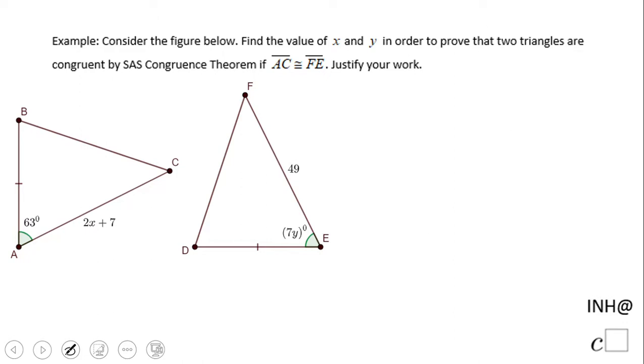Welcome or welcome back to I Need Help at C-Square. In this example, we're going to look at how to use the fact that we have two congruent triangles by SAS congruence theorem to find some variables.